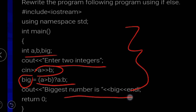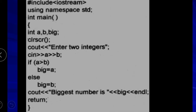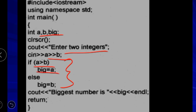To find the largest of two numbers, we can use both the if-else statement and the conditional operator. With the if-else statement, we declare variables and compare them. With the conditional operator, if a is greater, we store the big number accordingly — achieving the same result in fewer lines.